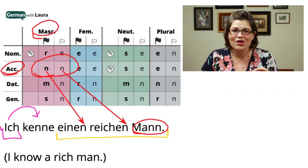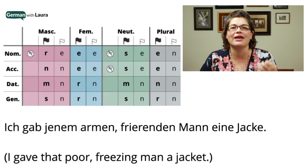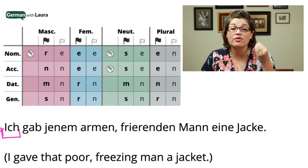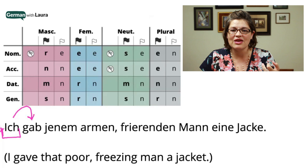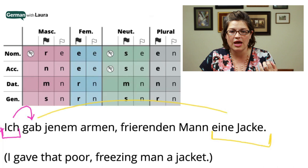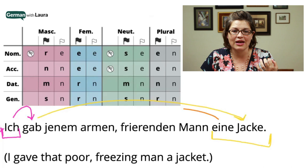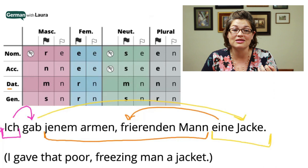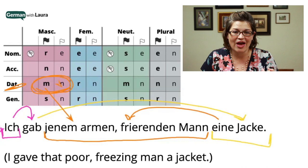Third example: 'Ich gab jenem armen frierenden Mann eine Jacke.' Nominative case first — the subject 'ich' — followed by the verb. What am I giving? A jacket, 'eine Jacke' — that's the direct object. To whom? To the poor freezing man — that's the indirect object, which goes into the dative case. We still have a masculine noun, but now in the dative case. That puts us at this intersection of the all-in-one declensions chart: the M is here, and then we have two N's at the end of 'armen' and 'frierenden.'